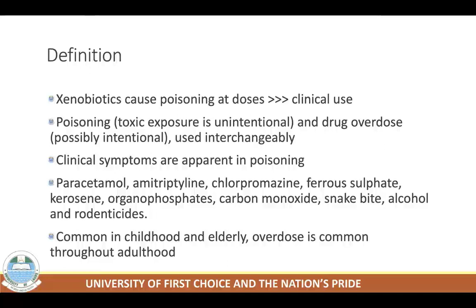In Nigeria, the drugs found to be culprits in most poison cases include paracetamol, amitriptyline, chlorpromazine, ferrous sulfate, and compounds like kerosene and organophosphate. A popular example of organophosphate is Otapiapia. There is also carbon monoxide poisoning, which is very common because of the use of generators in Nigeria.